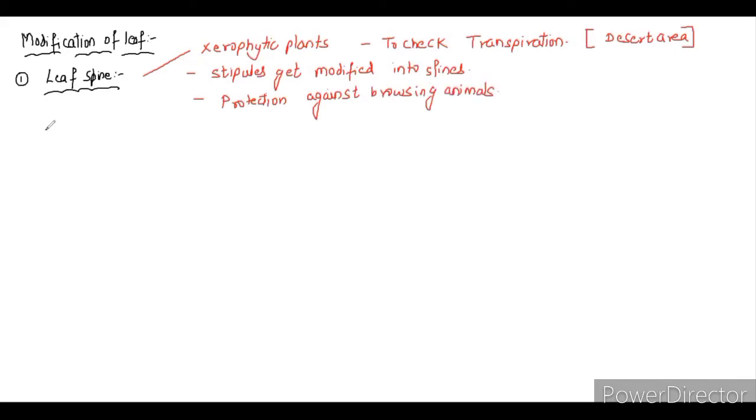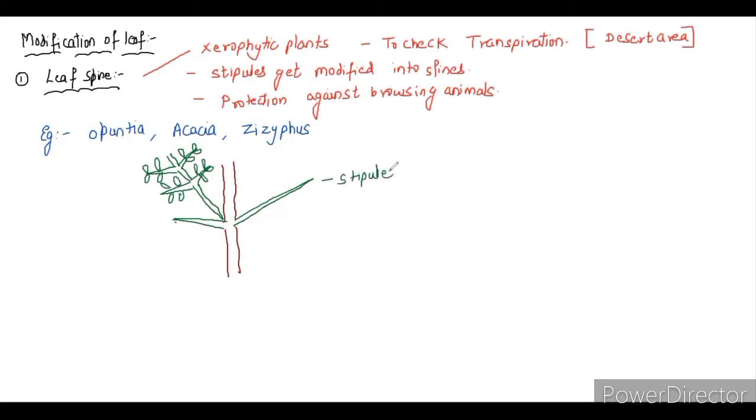In leaf spine, the stipules get modified into spines. It gives protection against browsing animals. Example: Opuntia, Acacia, Ziziphus. This kind of modification is seen only in those plants where they cannot afford to lose water by transpiration plus they protect their leaves from browsing animals. The most important point is that the stipule gets modified into spines. An example here in the diagram is of Acacia.